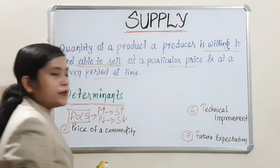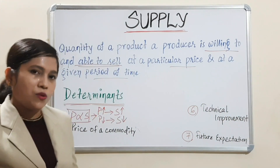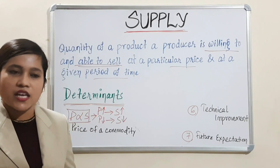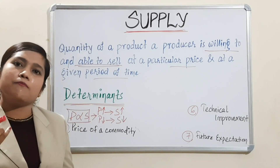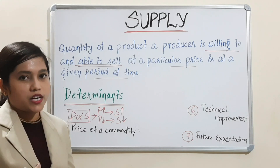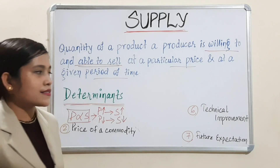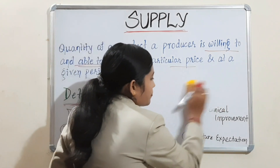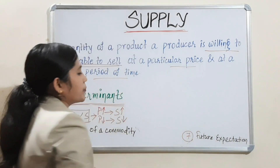Next is technical improvement. We all know that day by day technology is improving. If technology will be improved, we can have more amount of production. Production will increase means supply will increase. So technical improvement has a direct relationship with supply — if technical improvement will be more, we can supply more.